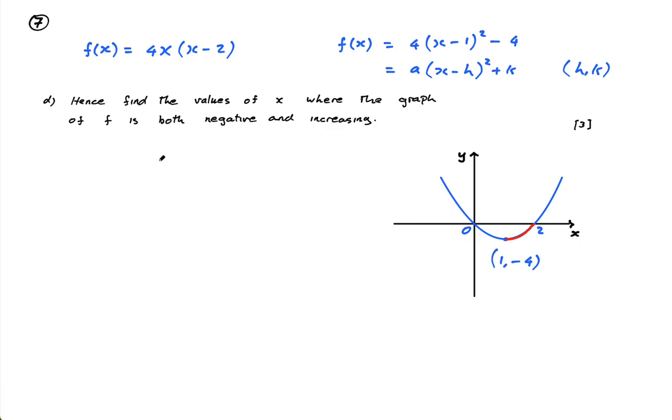But this I think is actually a nicer way to show your working. So the answer is x is negative and increasing when it is bigger than one and it doesn't include one, guys, because at one it's stationary, it's neither increasing nor decreasing. So it's bigger than one and less than two. Again it's not equal to two because at two it's equal to zero, it's not negative, it's actually zero. So that's the answer there. Okay, that's part d, question seven.